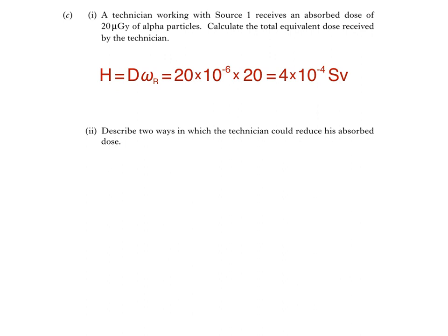Part 2 then asks us to describe two ways in which the technician could reduce his absorbed dose. The secret to this is to increase the distance between the technician and the source, so he could handle the source with tongs. Also, he could use some sort of shielding between himself and the source, so he could wear a lead apron or even wear gloves.